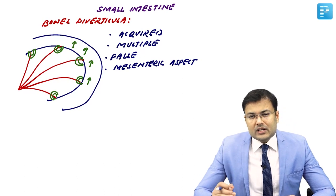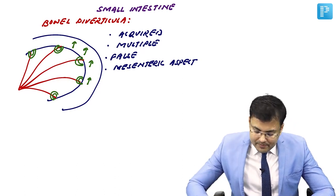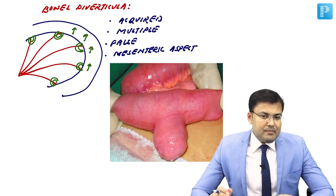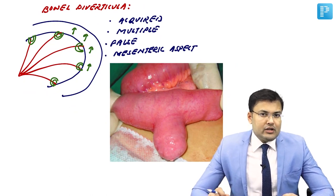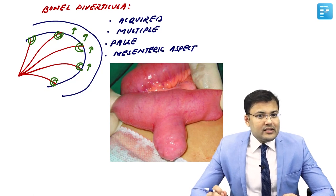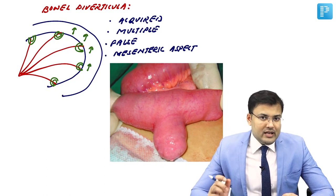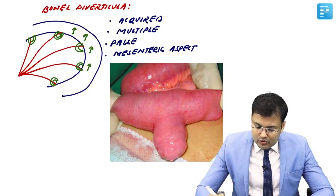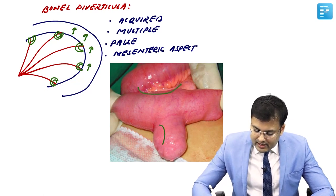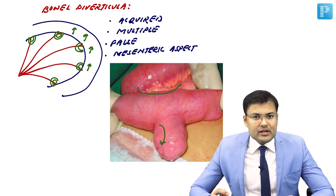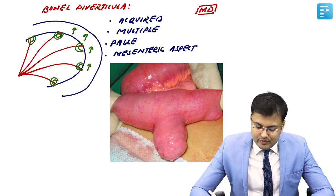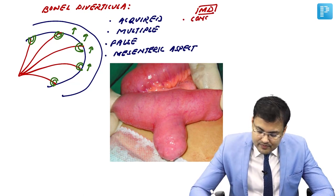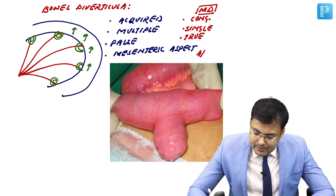There is one diverticulum that is just opposite — located along the anti-mesenteric border. This was asked as an image-based question in many entrance exams. The name of this diverticulum is Meckel's diverticulum. Meckel's diverticulum is congenital, single, true — containing all three layers — and located along the anti-mesenteric border.